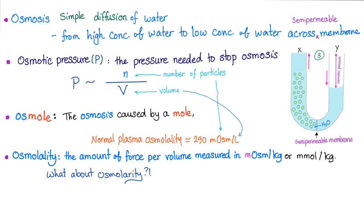Some definitions from previous videos. What's osmosis? Simple diffusion of water — from high concentration of water to low concentration of water, from low concentration of solute to high concentration of solutes. Osmotic pressure is the pressure needed to stop osmosis, which happens to equal the pressure of osmosis. An osmol is the osmosis caused by a mole. Normal plasma osmolality is 290 milliosmol per liter.